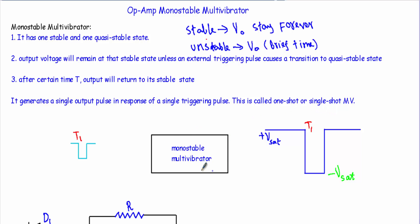This is a monostable multivibrator circuit and the output is stable at the plus Vsat level. It will stay at this level unless we apply any triggering pulse. At a certain instant I apply a negative triggering pulse, so our output voltage has a transition from plus Vsat to minus Vsat. As this is a quasi-stable or unstable state, the output voltage stays at this level for a brief interval of time, after which there is another transition from the unstable state back to plus Vsat.